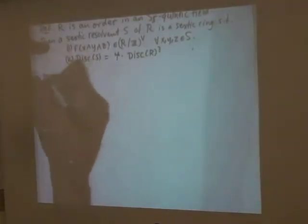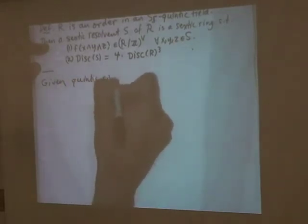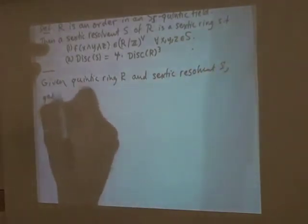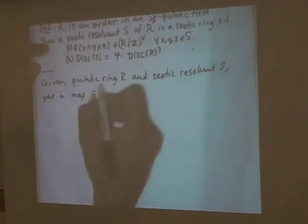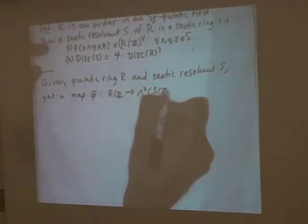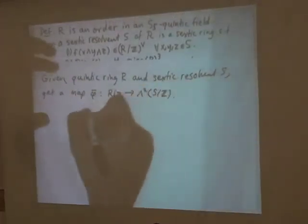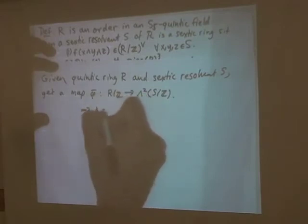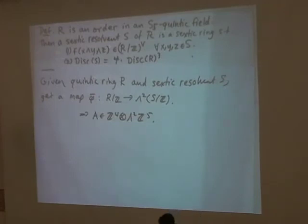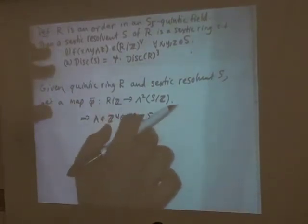The usual question: once one is given a quintic ring R and a sextic resolvent S, we get a map phi bar from R mod Z to wedge 2 of S mod Z, giving an element A in Z^4 tensor wedge 2 Z^5. We want to see if given A, we can recover R and S. That gives a bijection between elements of the space up to equivalence and pairs (R, S).